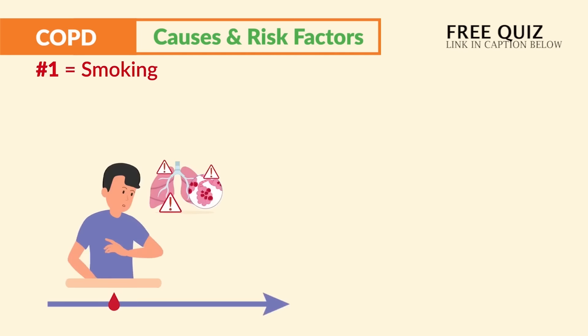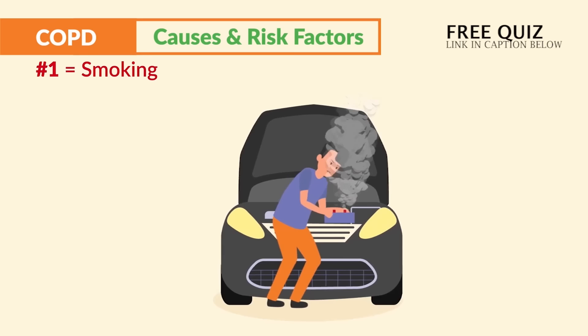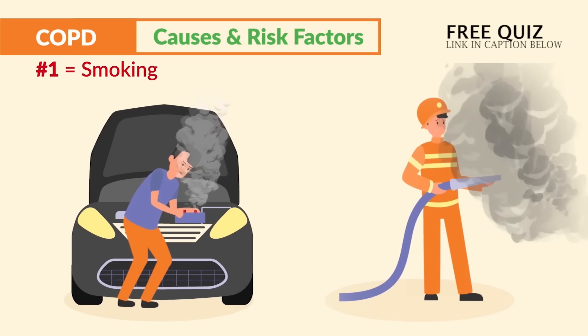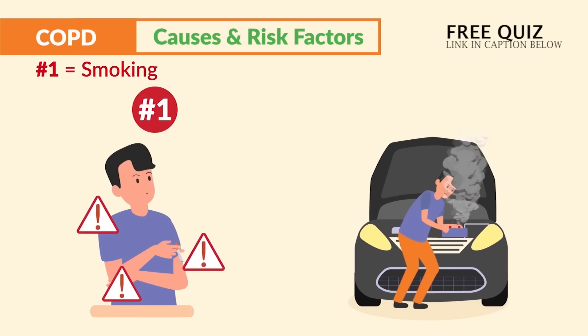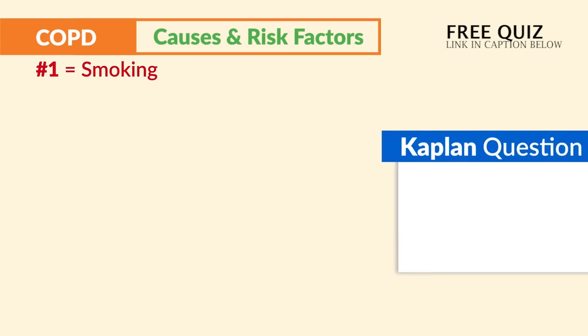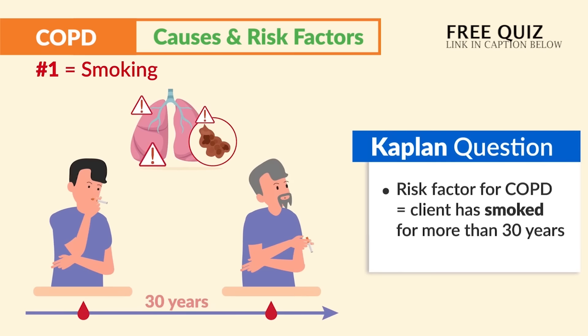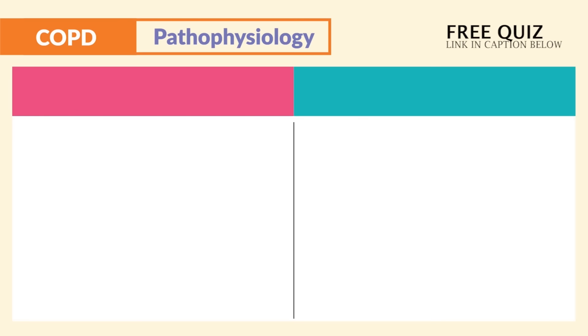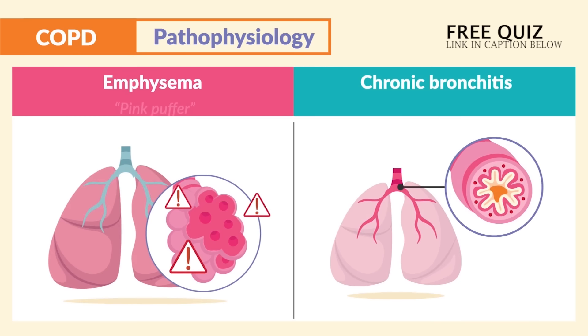Other causes include long-term exposure to respiratory irritants, like being a car mechanic breathing in chemical fumes or a wildland firefighter exposed to dust and smoke. But smoking is considered the number one primary risk factor, secondary to chemical exposures. Kaplan mentions a risk factor for COPD as a client that has smoked for more than 30 years.